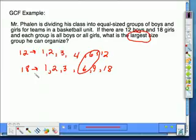So if I have 2 groups of 6 boys and 3 groups of 6 girls, each of the groups are going to have the same number of people in the group, which is 6. So the largest size group he can organize is with 6 people.